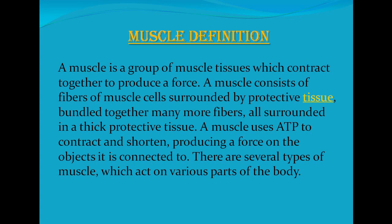There are several types of muscles which act on various parts of the body. A muscle is a group of muscle tissues which contract together to produce force. A muscle consists of fibers of muscle cells surrounded by protective tissue, bundled together, all surrounded in a thick protective tissue. A muscle uses ATP to contract and shorten, producing a force on the object it's connected to. There are several types of muscles which act on various parts of the body.